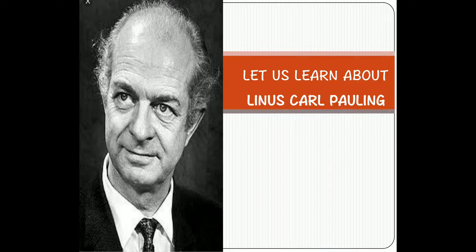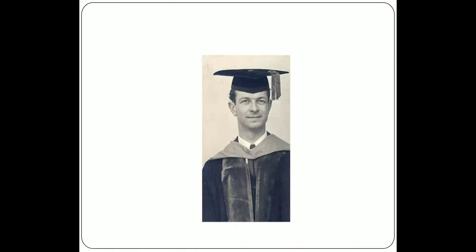Linus Carl Pauling was born on 28 February 1901 in Portland, Oregon, United States. He received his degree of B.Sc. in chemical engineering in 1922 and was appointed a teaching fellow in chemistry at the California Institute of Technology, where he was a graduate student from 1922 to 1925. In 1925 he was awarded a PhD in chemistry with minors in physics and mathematics.